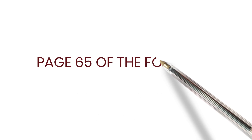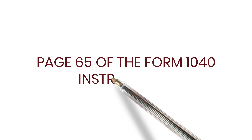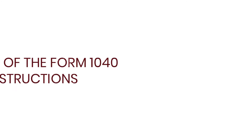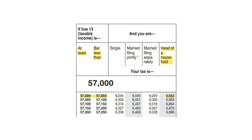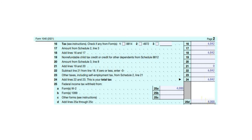Next we will calculate your tax. You can find the tax tables beginning on page 65 of the Form 1040 instructions. Since your taxable income was at least $57,000 but less than $57,050, and your filing status is Head of Household, your tax is $6,842. Put this amount on Line 16 and carry it down to Lines 18, 22, and 24, as in this example you do not have any other credits or taxes.